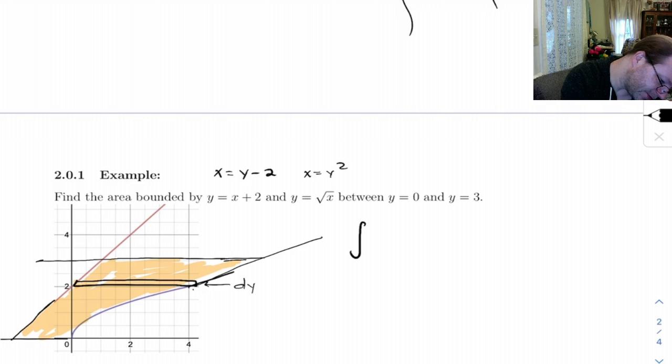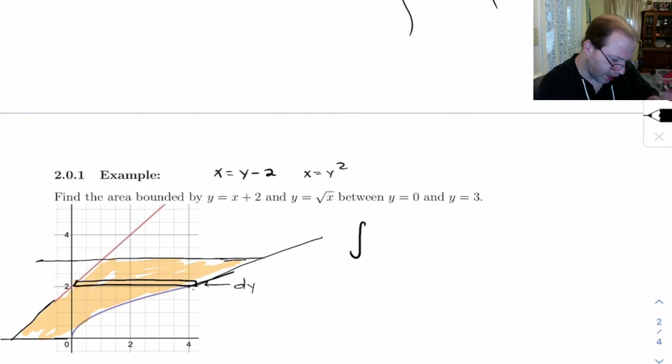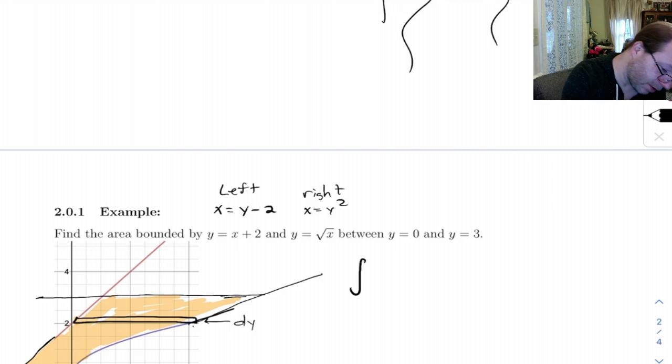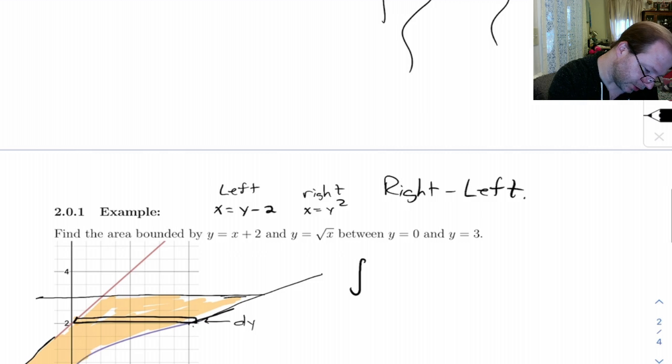Now, let's see, which one's on the left and which one's on the right? Let's see, the left is the line and the right is the parabola. And the thing to remember is you always do right minus left. So let's see, that means we've got y squared on the right minus y minus 2 on the left, dy.